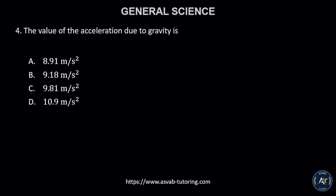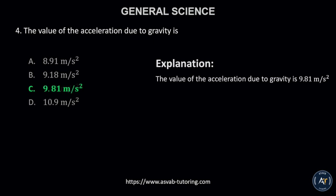Number 4. The value of the acceleration due to gravity is? A. 8.91 m/s², B. 9.18 m/s², C. 9.81 m/s², or D. 10.9 m/s²? The correct answer is letter C, 9.81 meter per second squared. The value of the acceleration due to gravity is 9.81 meter per second squared.